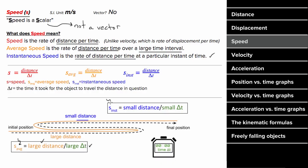Or to determine the instantaneous speed, you could look at an infinitesimally small distance and divide by the time it took to travel that infinitesimally small distance. The units for speed are meters per second. It is not a vector, and speed can only be positive or zero. Speed can never be negative.